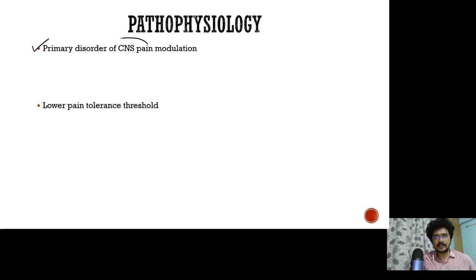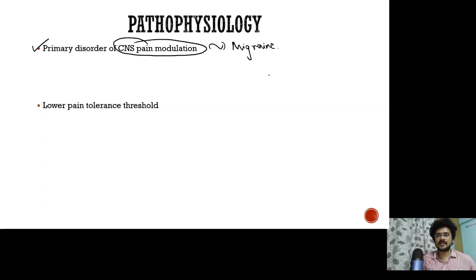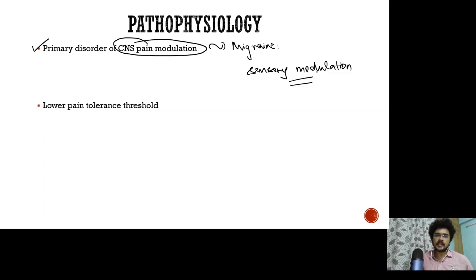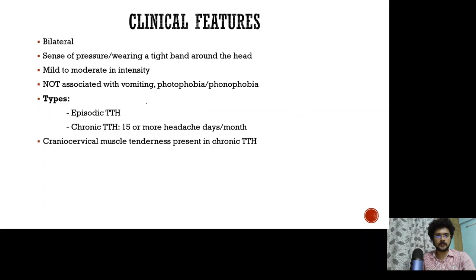Coming to the pathophysiology, tension type headache is a primary disorder of central nervous system pain modulation. This is in contrast to migraine, where you have a more generalized disturbance in sensory modulation. Whereas in tension type headache, you have a predominant disorder of CNS pain modulation, and patients also have a lower pain threshold.